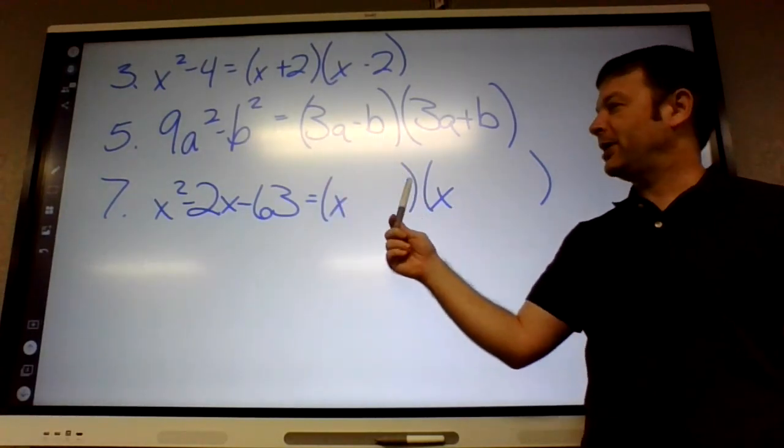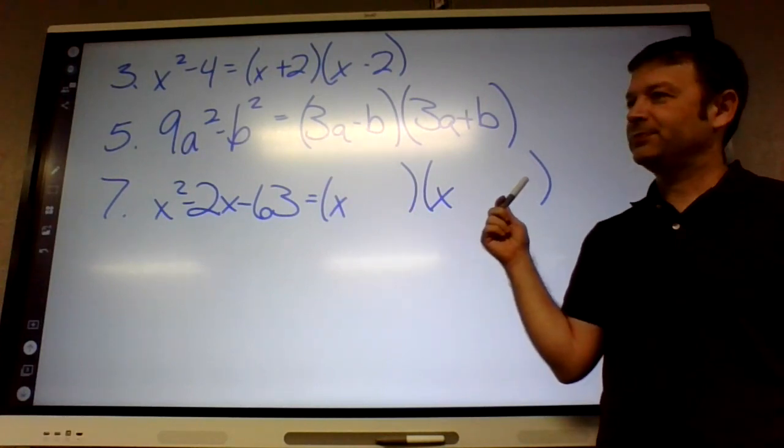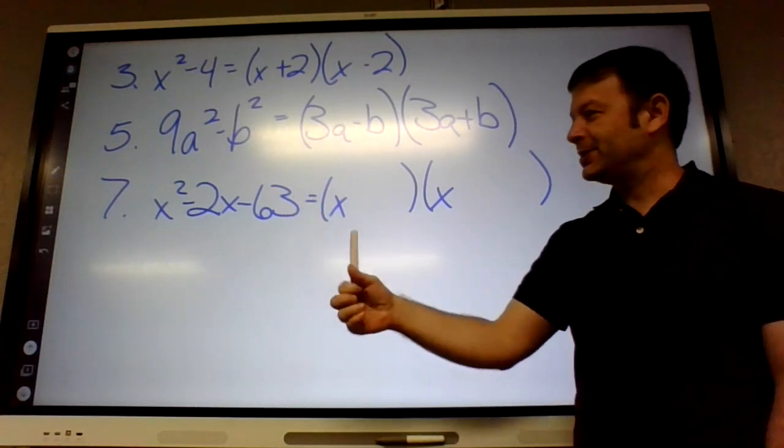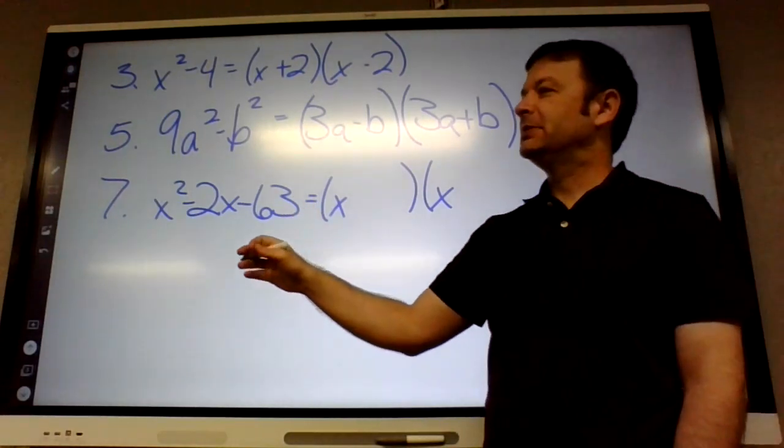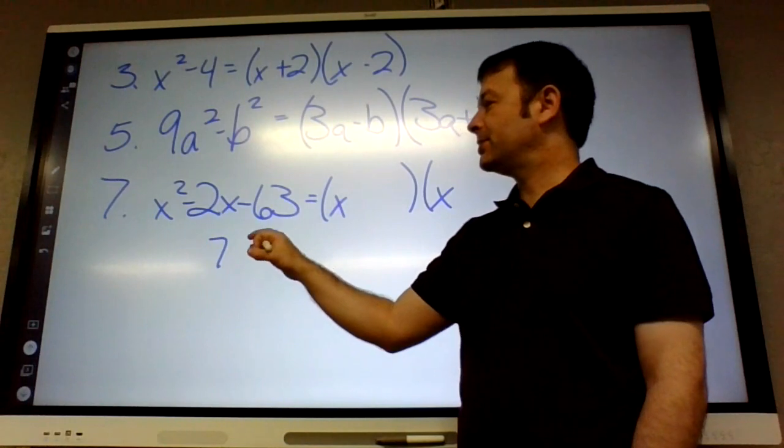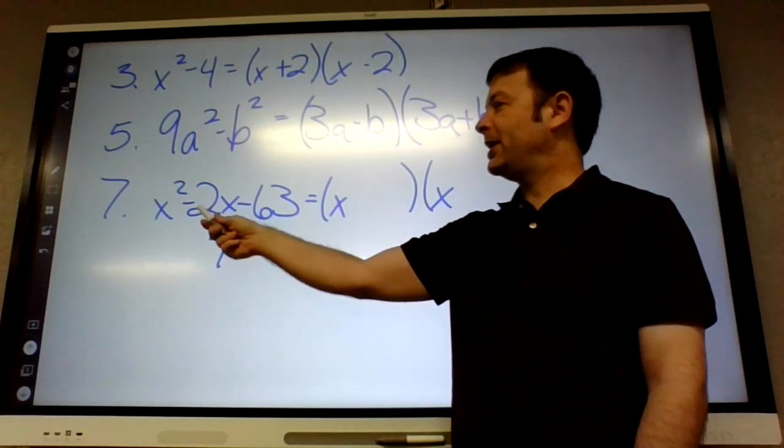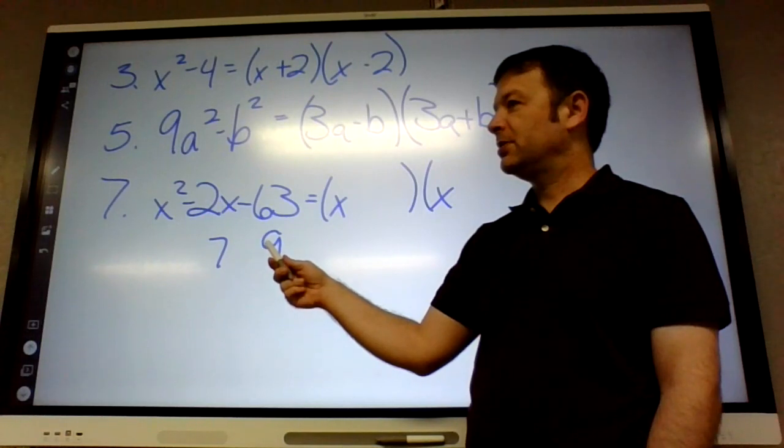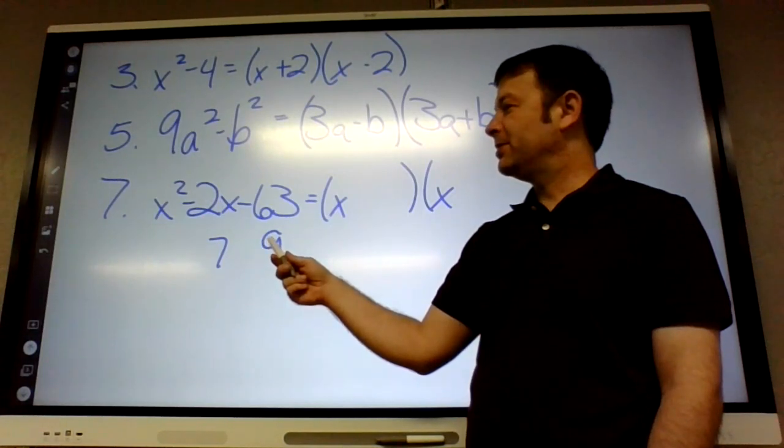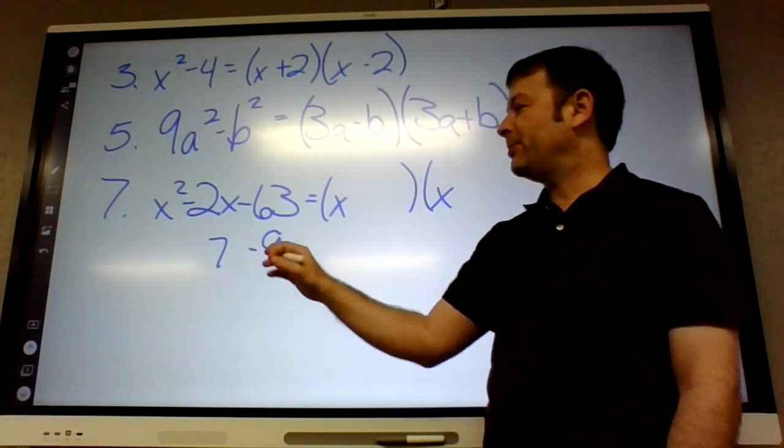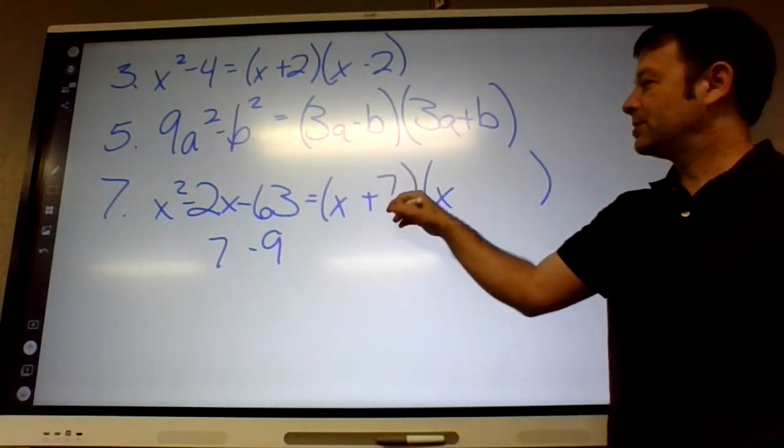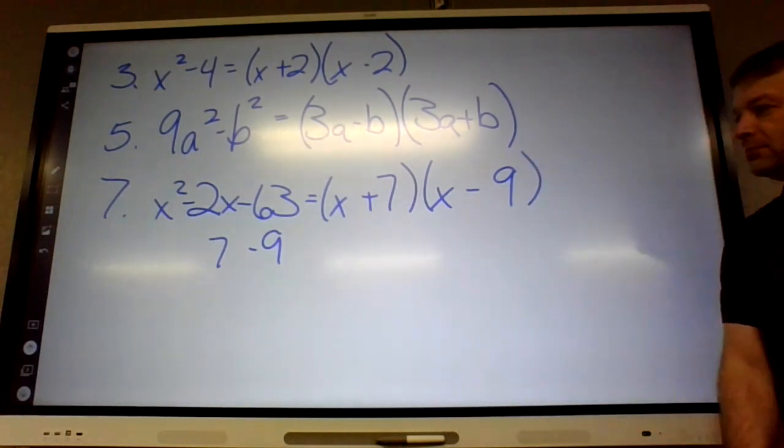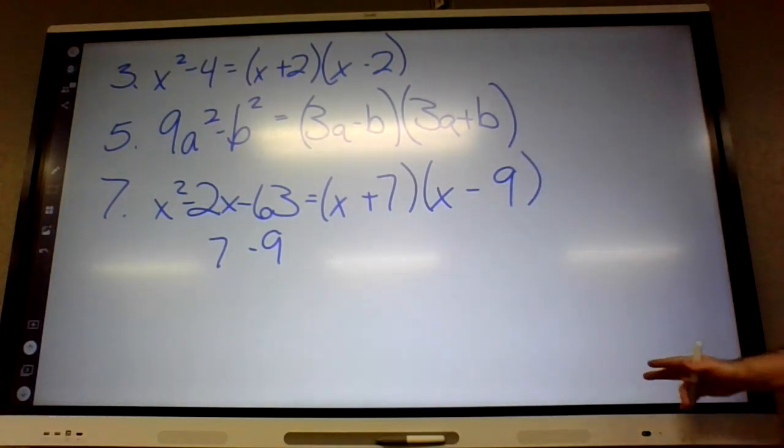Do you know how we figure out the backside? Yes, of course. It has to be multiplied to negative 63. Right. Do you remember what multiplies into 63? Seven and nine. And to add up to negative two, what do we need to do with this? That would work. So seven minus nine. You did a good job.